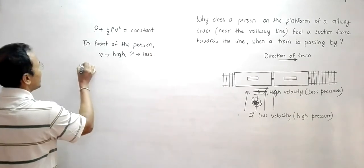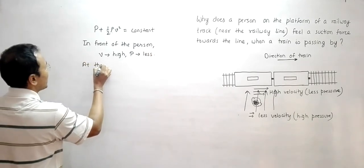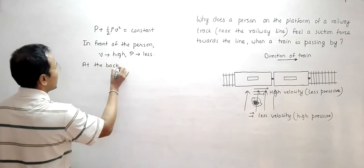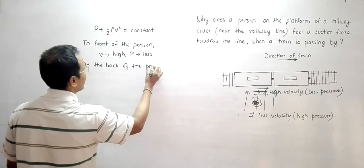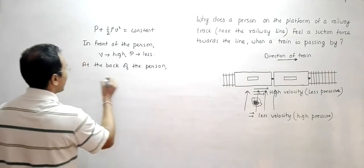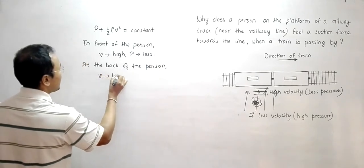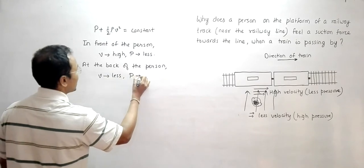And similarly, at the back of the person, we have v is less, which makes p high.